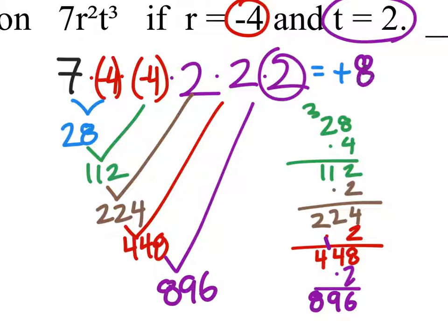Again, we know it's positive because in this being all multiplication, we had an even number of negatives. So our final answer is a positive.